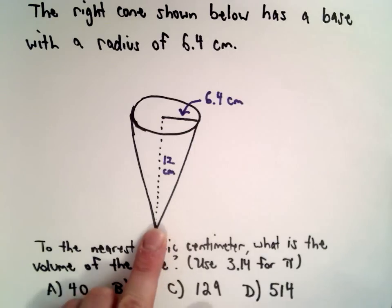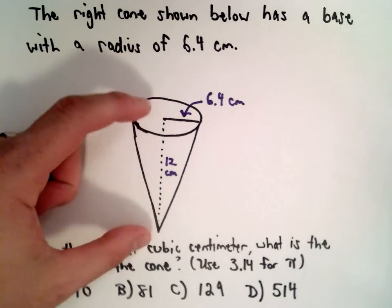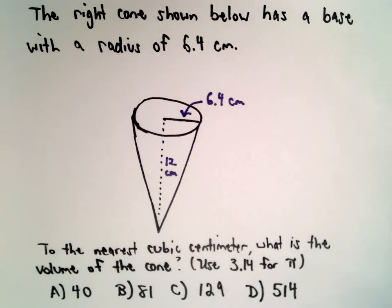We've got a right cone shown in the picture and it has a base with a radius of 6.4 centimeters and a height of 12 centimeters. To the nearest cubic centimeter, we want to determine the volume of the cone.